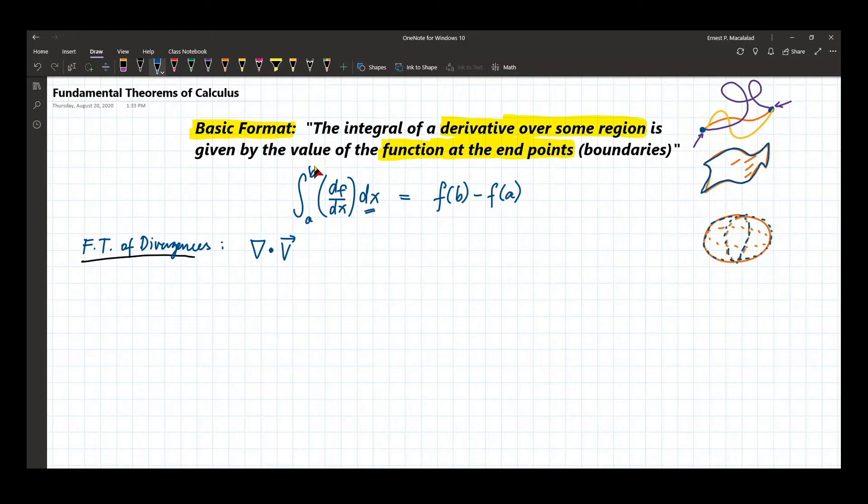Now, let's use the basic format. The integral of the divergence of vector V over some volume is equal to the value of the function at the surface that bounds the volume.